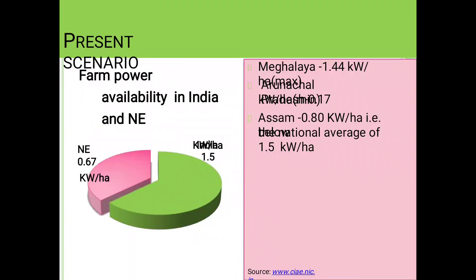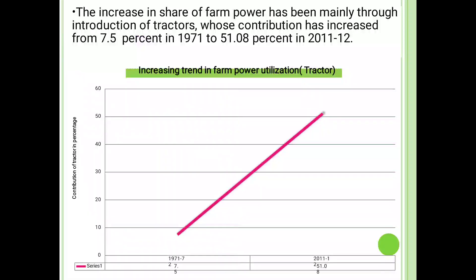Present scenario of farm power availability in India: NE 0.61 kW per hectare and 1.5 kW farm power availability. Meghalaya 1.44 kW per hectare, Assam 0.80 kW per hectare, that is average of 1.5 kW per hectare. Increase in share of farm power has been mainly through introduction of tractors whose contribution has increased from 7.5% in 1971 to 51.08% in 2001-2012. There is an increasing trend in farm power utilization by using the tractor.